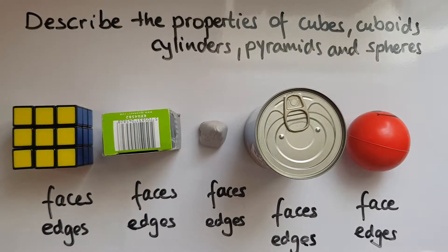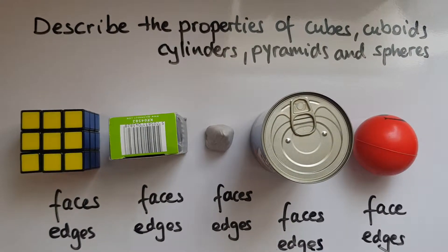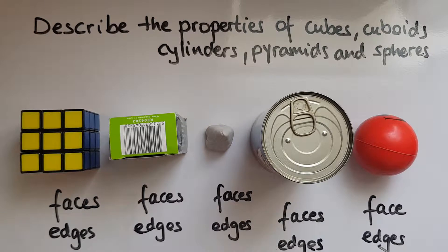In this video we'll learn to describe the properties of cubes, cuboids, cylinders, pyramids and spheres. You probably recall that we call these 3D shapes or three-dimensional shapes.